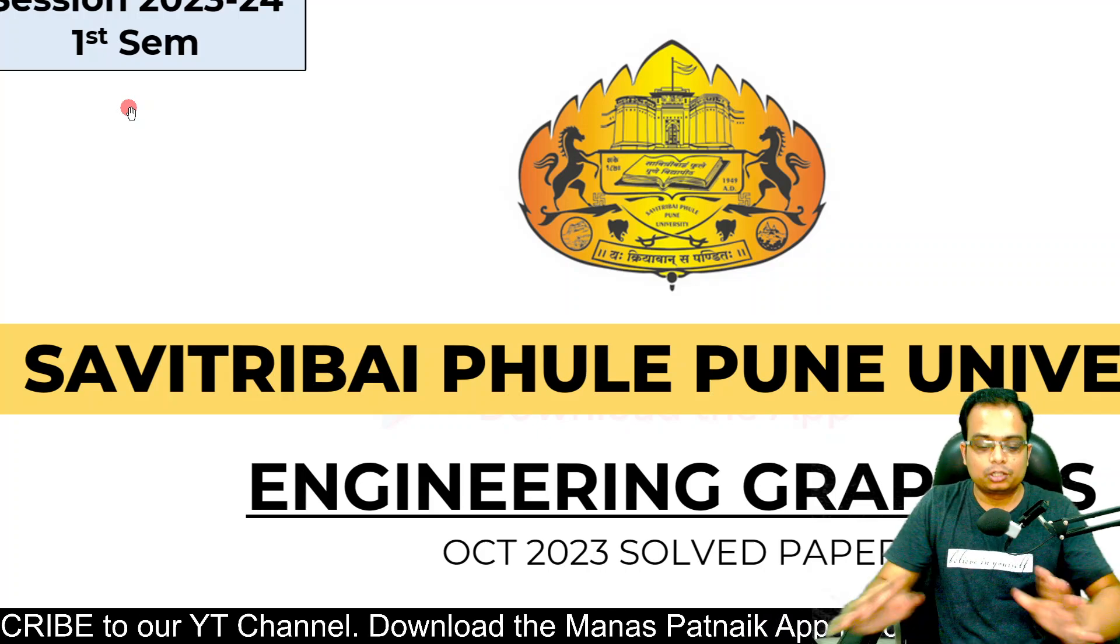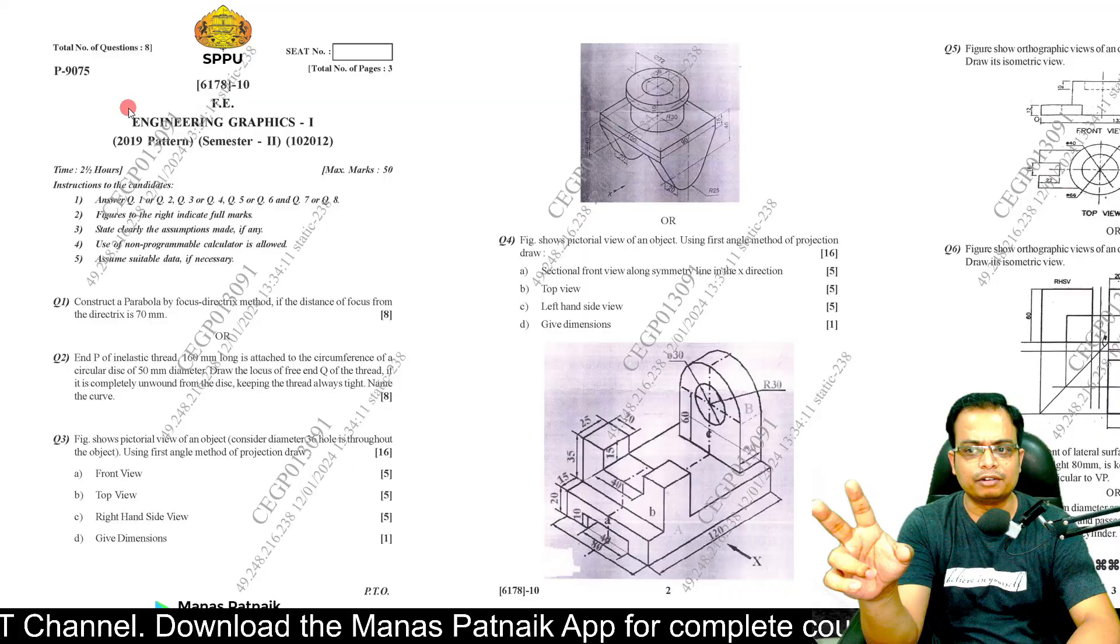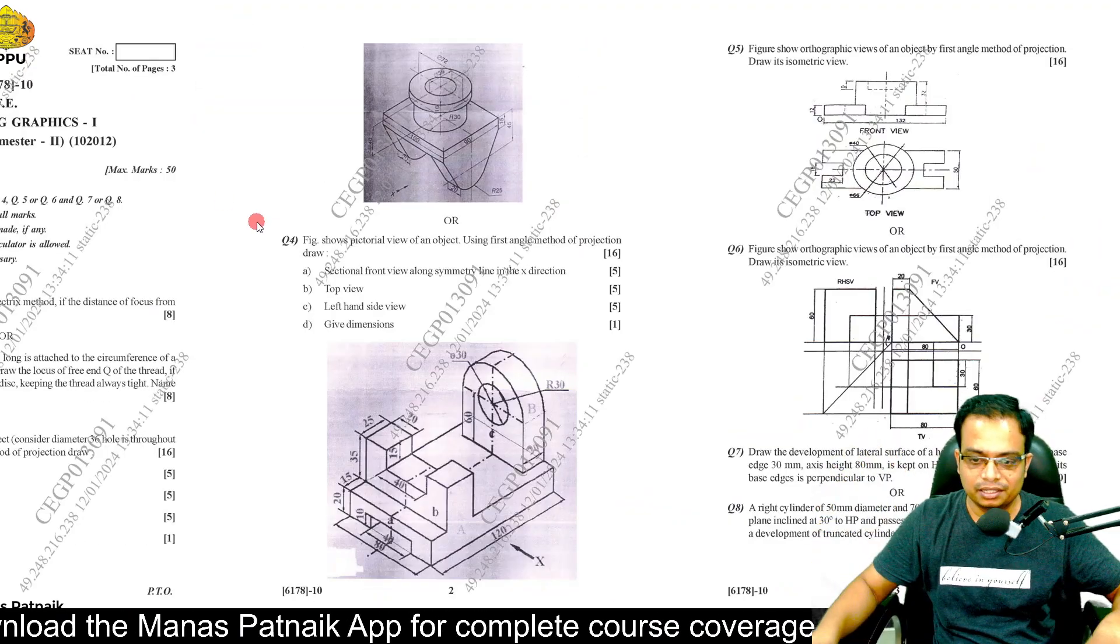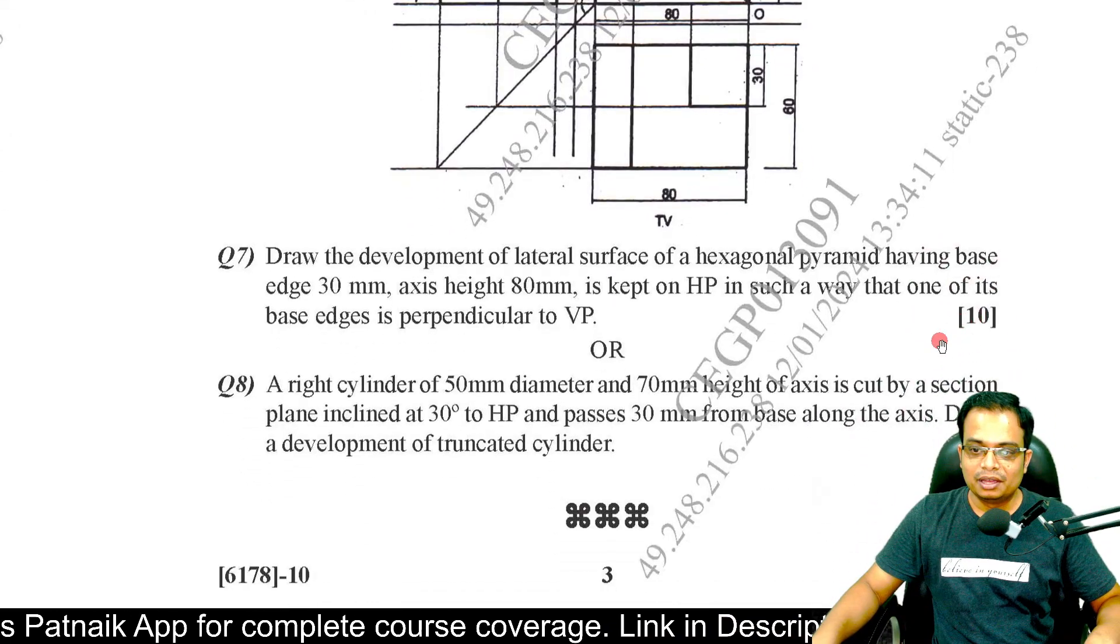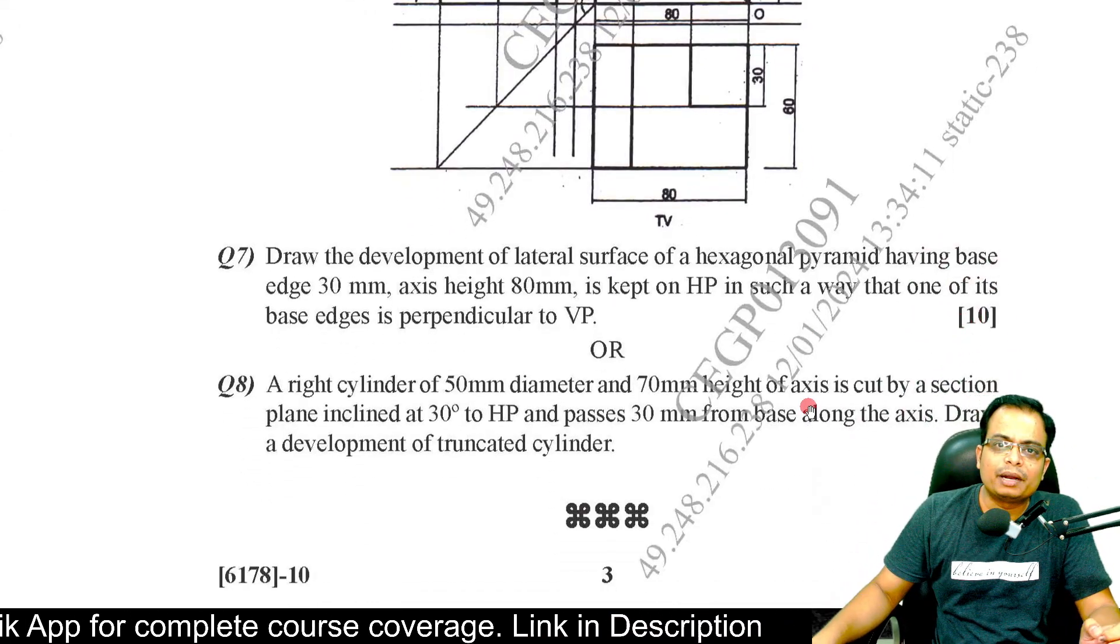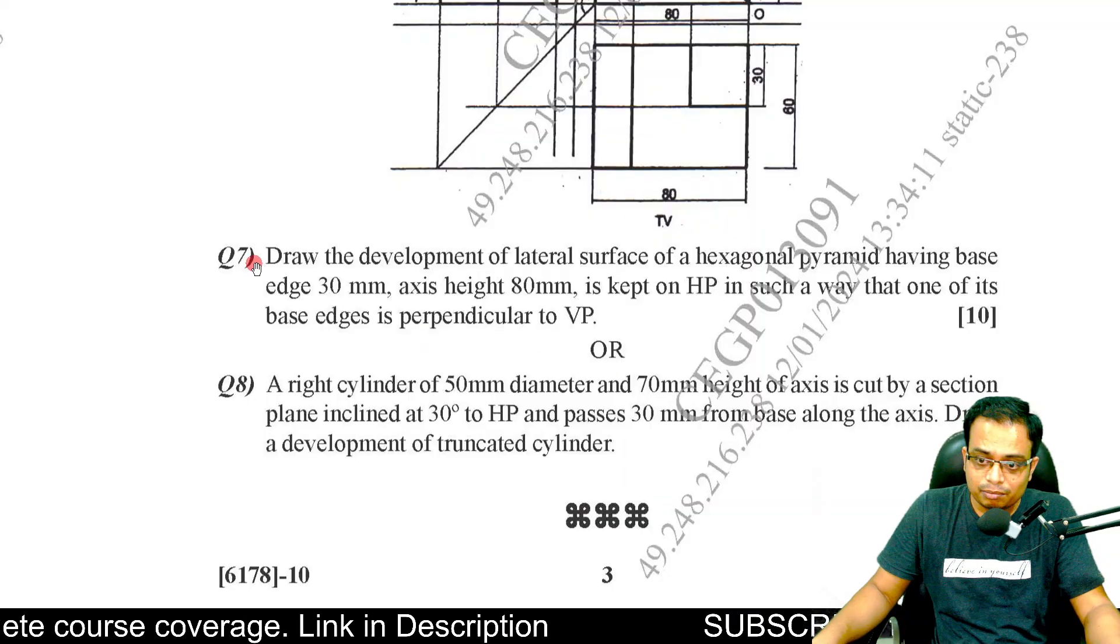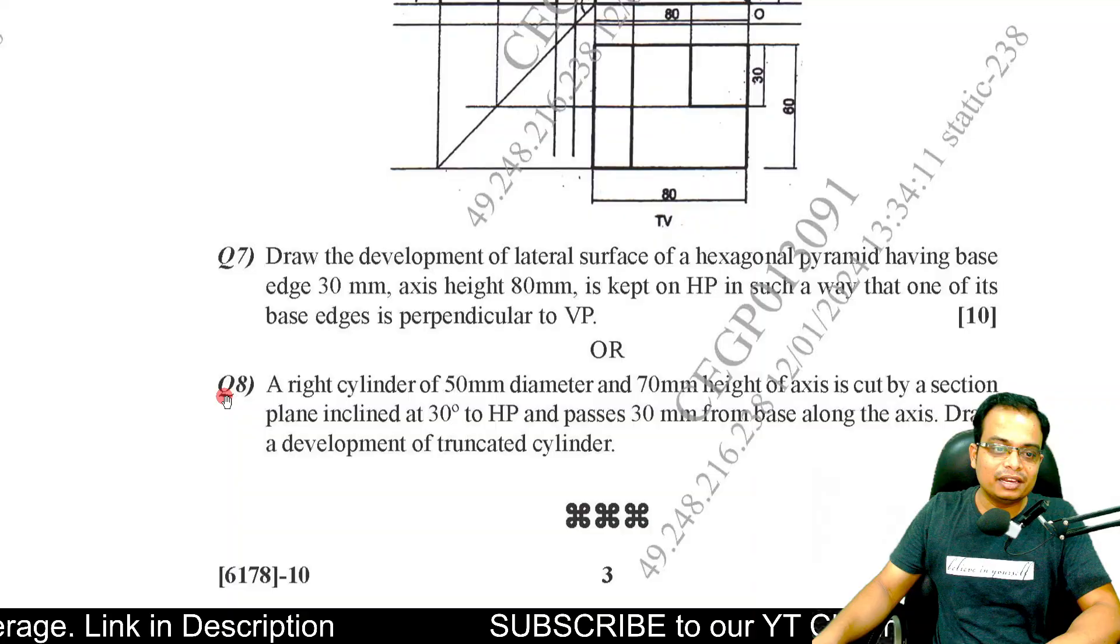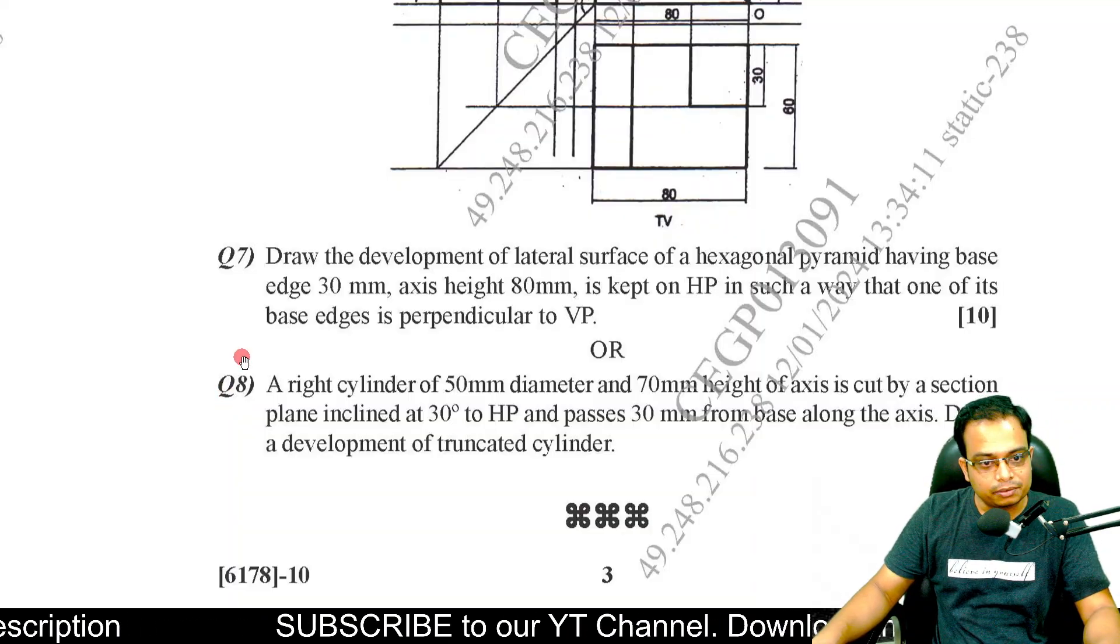The next problems, question number seven and eight, are both from the chapter on development of surfaces. Both problems are very easy, but I would choose question number seven because it's even easier than the eighth one with very less complications and effort required for the construction.